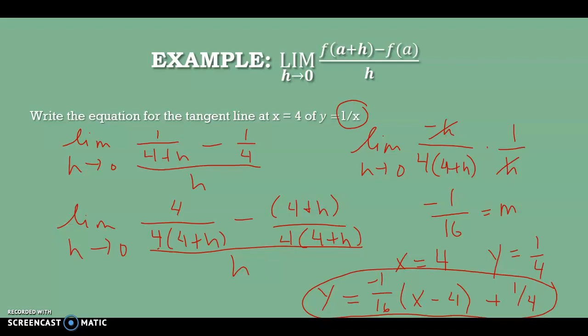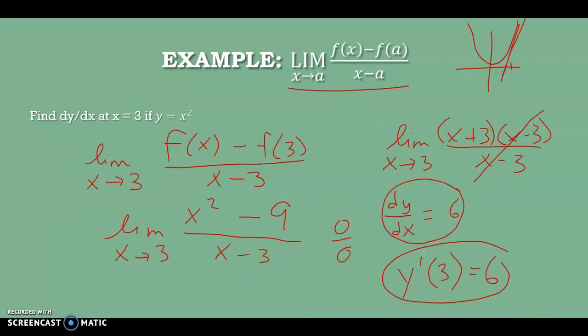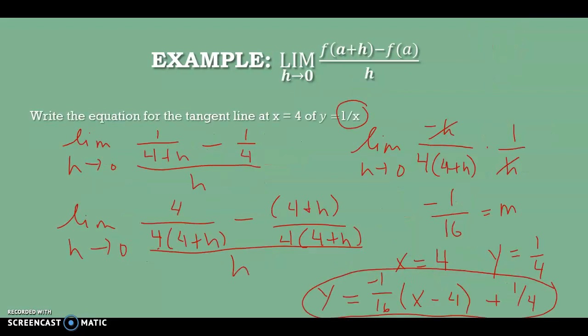To summarize: we have two different ways of finding the slope of the tangent line using either limit formula. Both formulas give us the slope. If we want to write an equation for a tangent line, we always need three things: the x-coordinate, the y-coordinate, and the slope. Hope this helps. Bye!